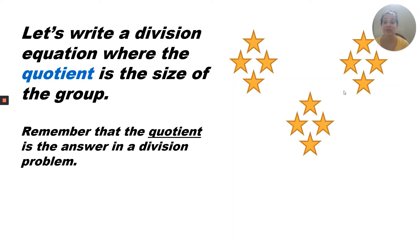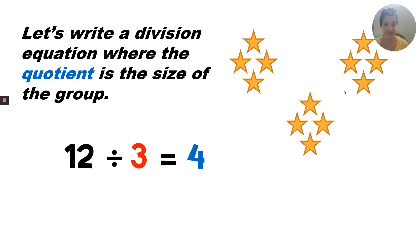Let's write a division equation where the quotient is the size of the group. Remember, the quotient is the answer in a division problem. We always start with the largest number — the whole group. There are 12 in all, so the first number is 12. That's the dividend. We're dividing it into three groups, so the second number is three — that's the divisor. The last number is the answer, or the quotient. There are four in each group, so 12 divided by three equals four.